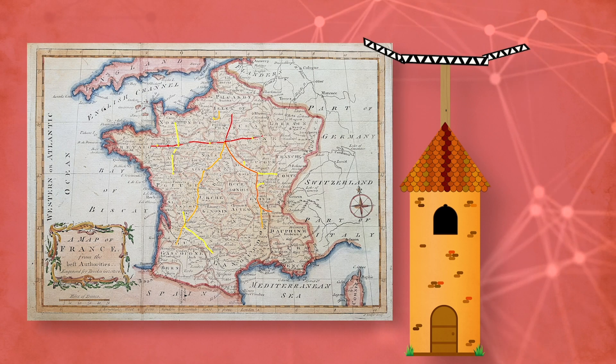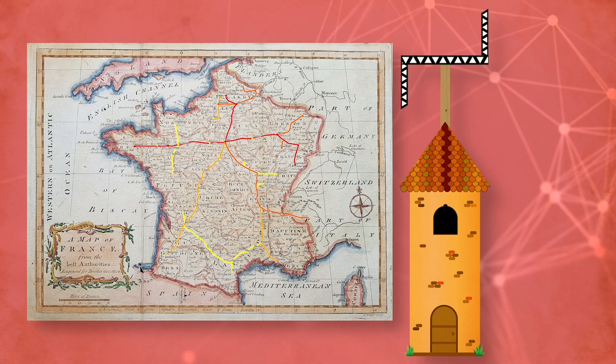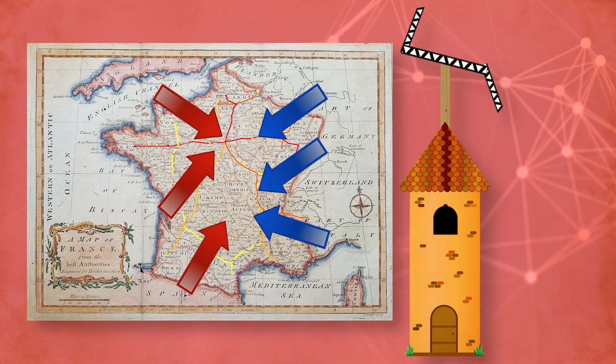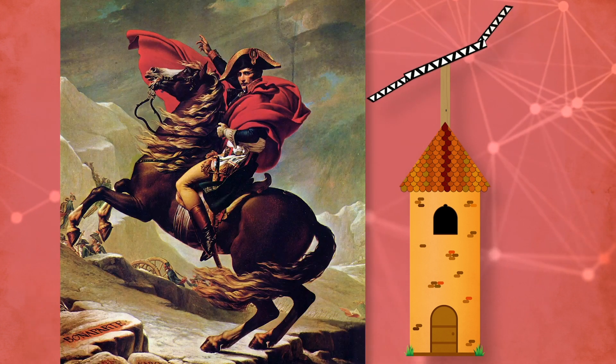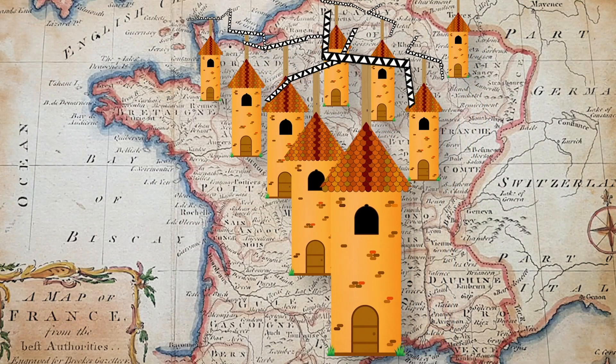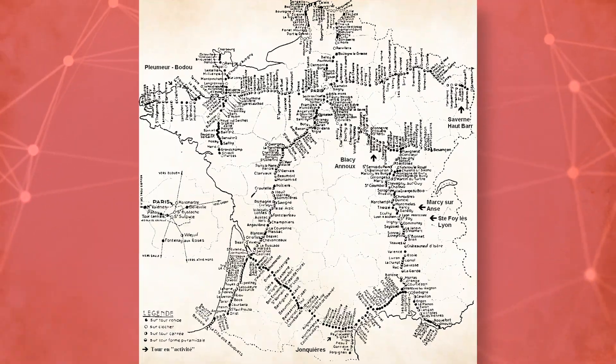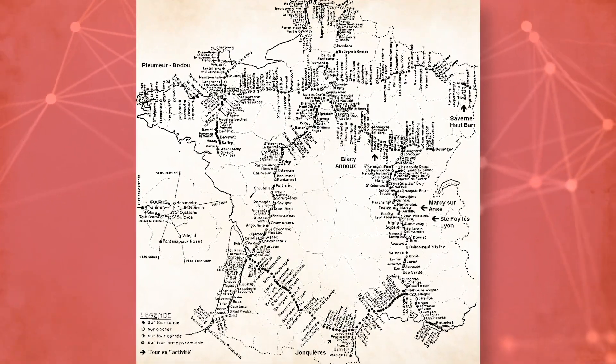The French government successfully used the Schaap semaphore line to transmit coded information to military units and receive intelligence on enemy movements faster than ever before. After seizing power, Napoleon Bonaparte invested heavily in its expansion, and Schaap's system eventually stretched all across France, comprising a network of 566 stations over a combined distance of 3,000 miles.